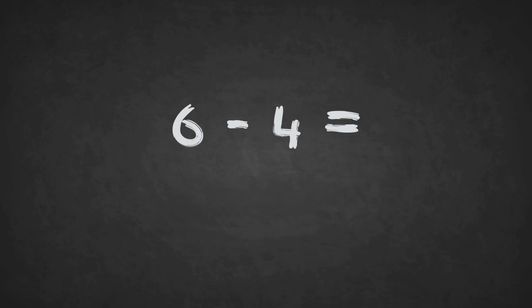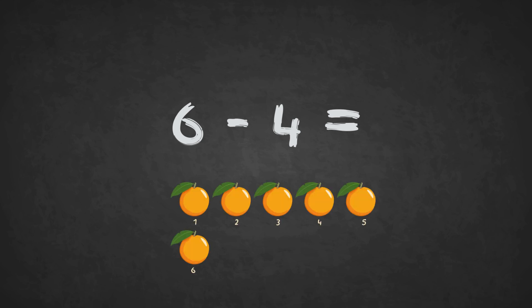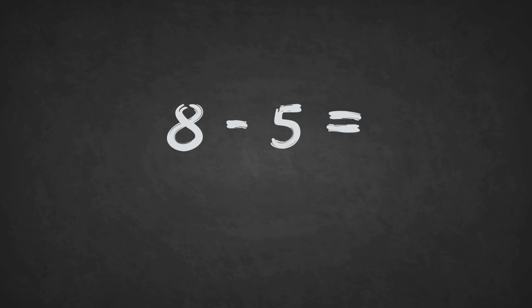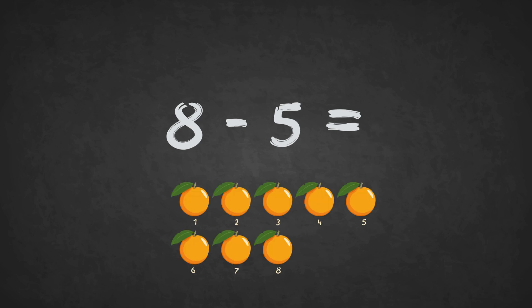6 minus 4 equals 1, 2. The answer is 2. 8 minus 4 equals 1, 2, 3. The answer is 3.